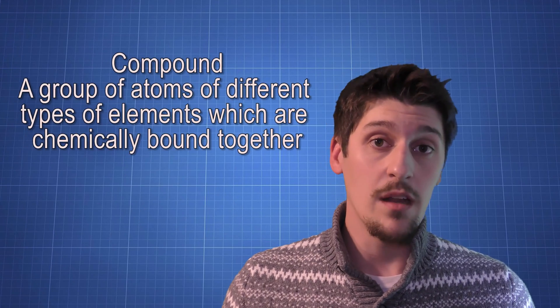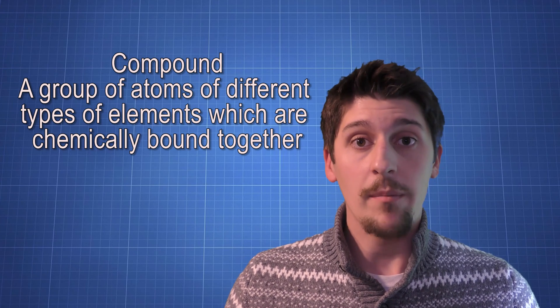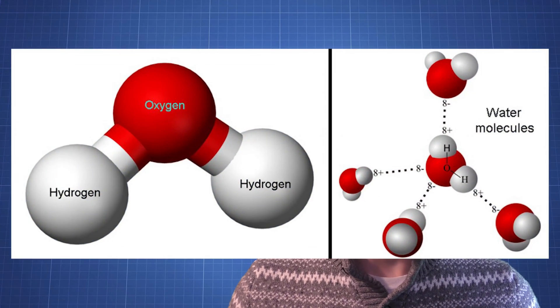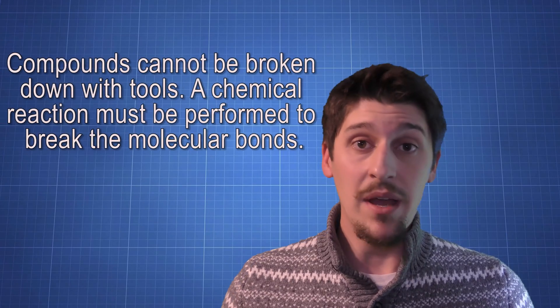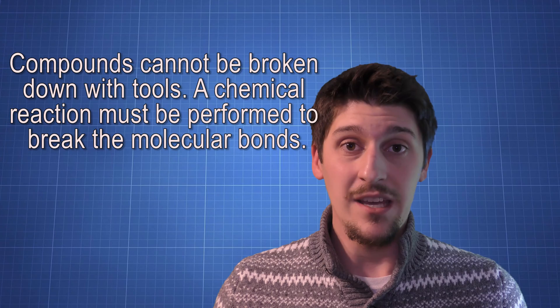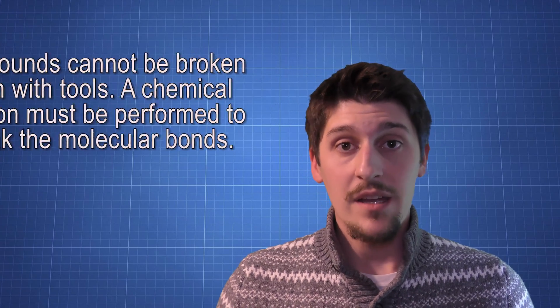Compounds are a group of elements that are chemically bound to each other. Some compounds naturally exist in the world around us, and some can be artificially created. A compound can't be broken up mechanically—you can't split it with a knife. Instead, you need to use a chemical reaction to split up the grouping.